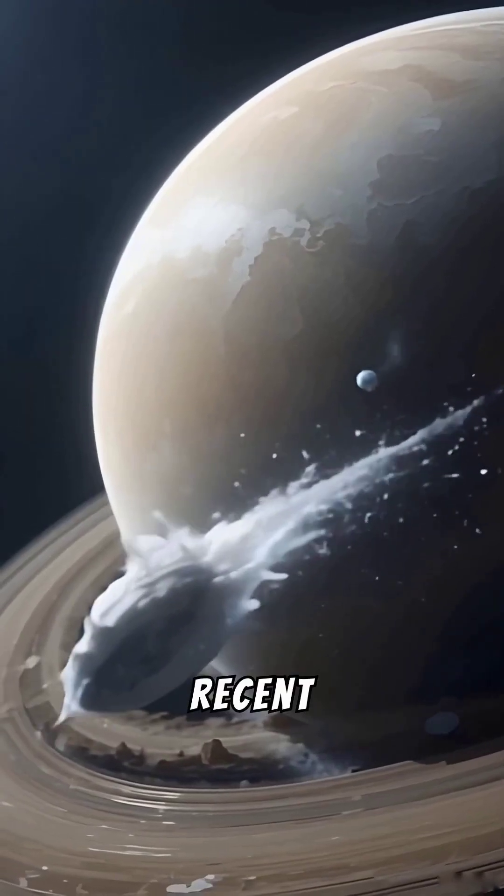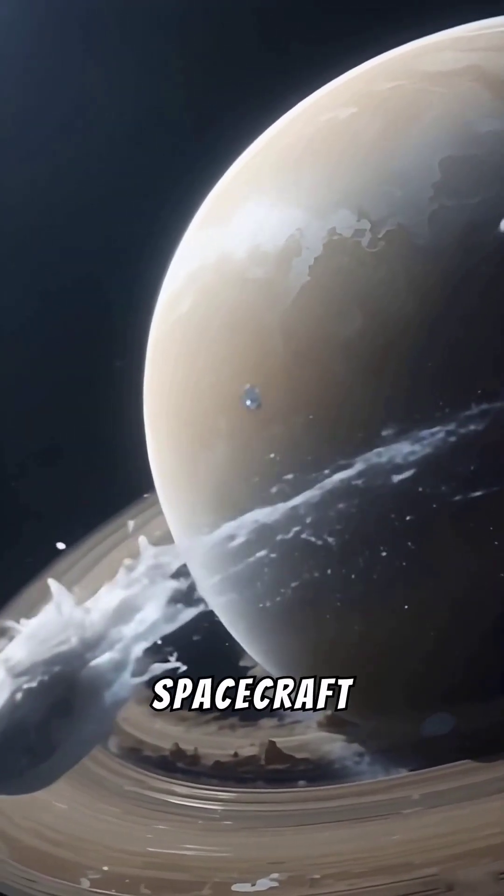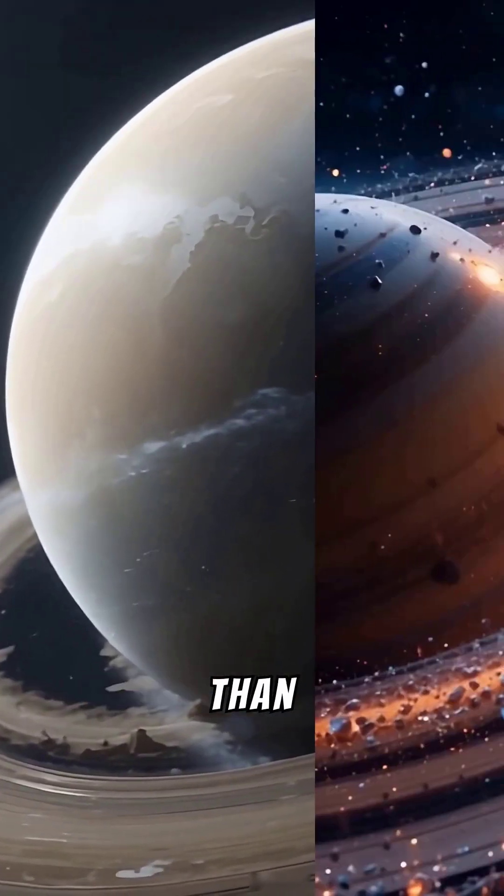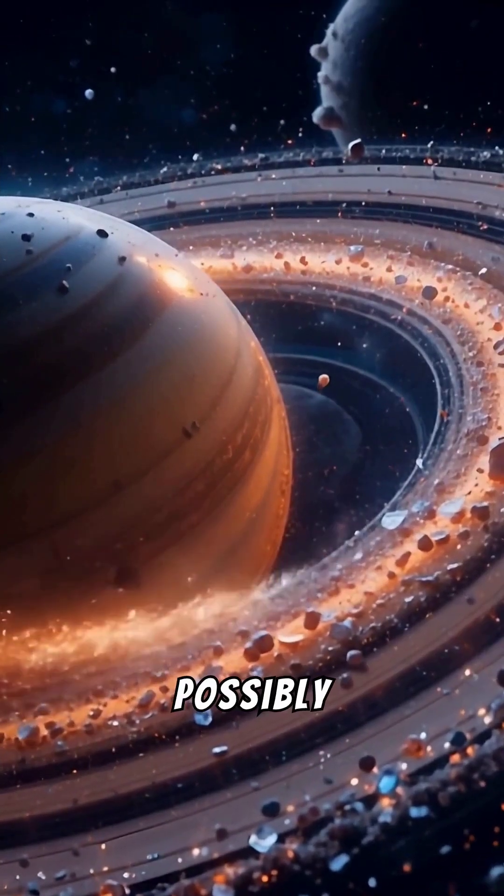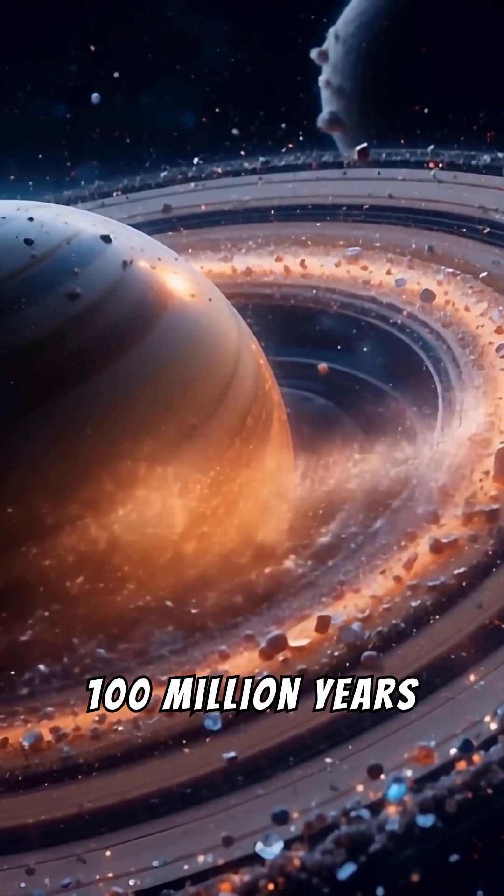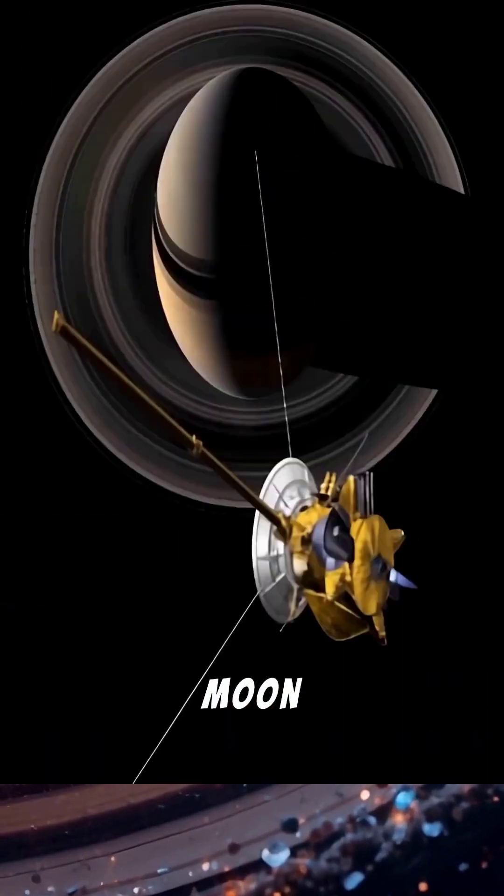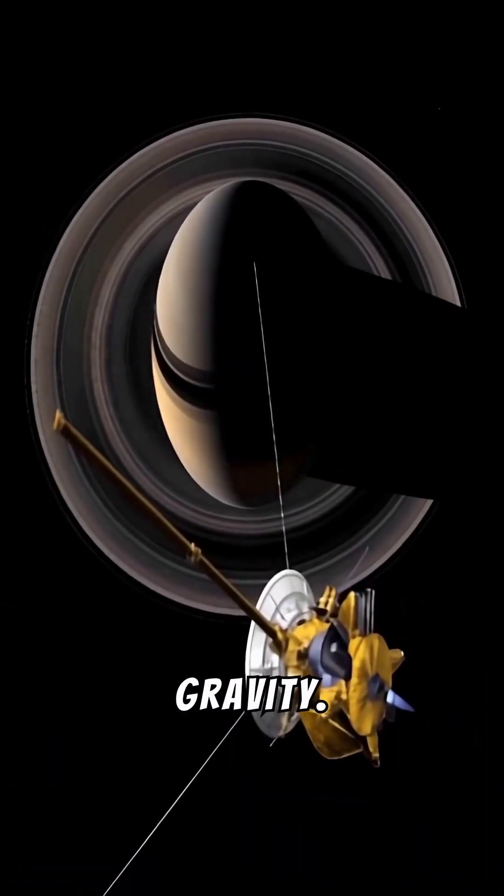Furthermore, recent observations by the Cassini spacecraft have revealed that the rings may be much younger than previously thought, possibly formed as little as 100 million years ago when a comet or icy moon was ripped apart by the planet's gravity.